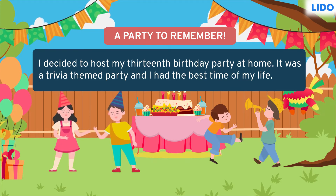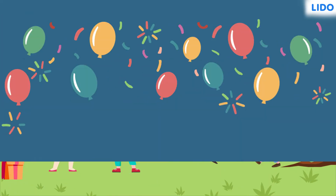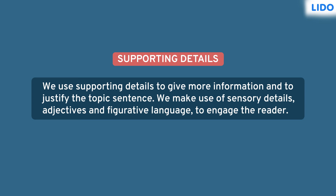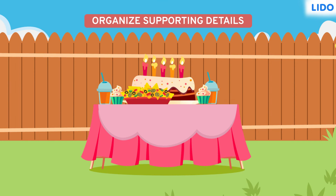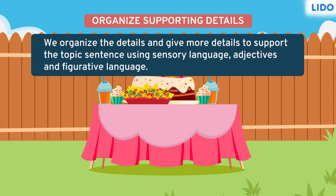Let us see what comes next. Next is supporting details. We make use of sensory details, adjectives and figurative language to engage the reader and to support the topic sentence. The third stage of descriptive writing is to organize these details. Let us understand what are sensory details, adjectives and figurative language.